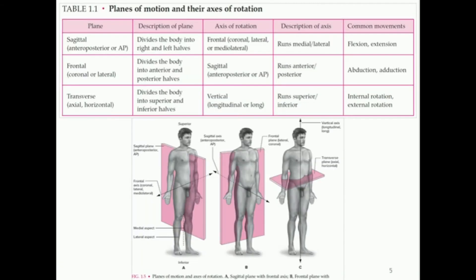Movements occur within these planes. To understand which plane a movement is in, imagine your arm is covered in paint — whichever plane you'd be painting as you move is the plane of motion. Take a bicep curl: starting in anatomical position, the arm does flexion and extension. Moving through that plane beside your arm means you're painting the sagittal plane. So the sagittal plane typically promotes movements such as flexion and extension.